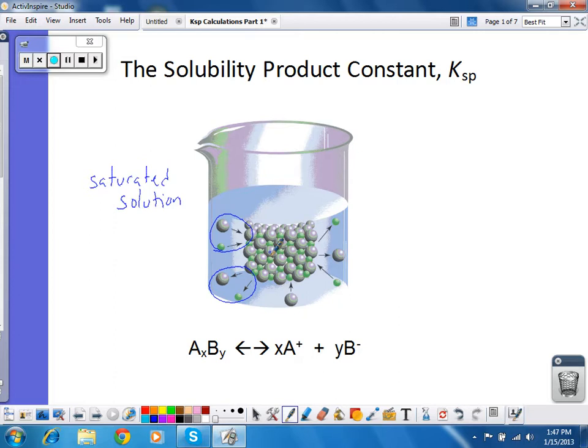I can represent this dissolving equilibrium by this equation in general. So I have equilibrium between my solid on this side and my ions on that side. Now note that it doesn't have to be plus 1, minus 1.